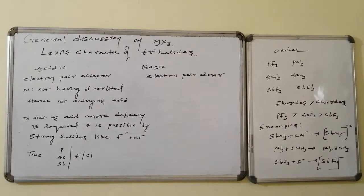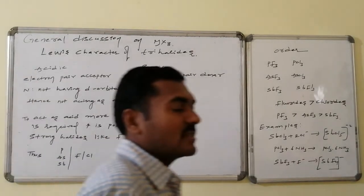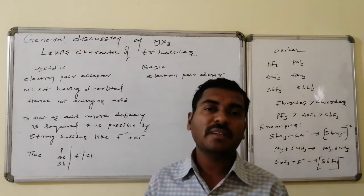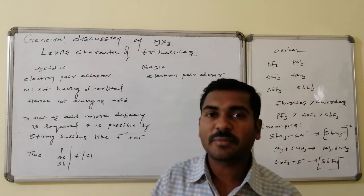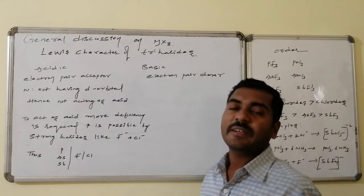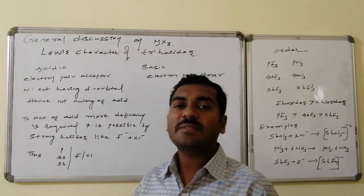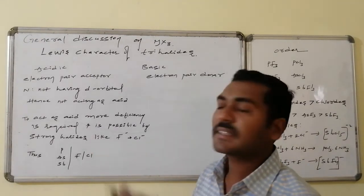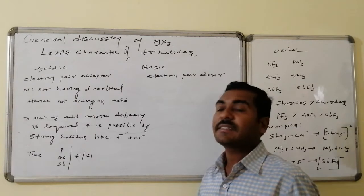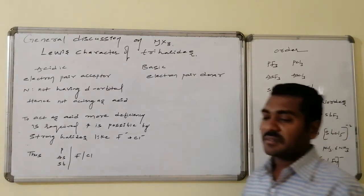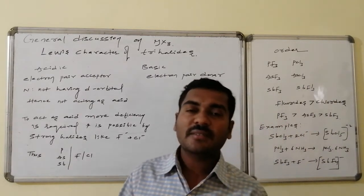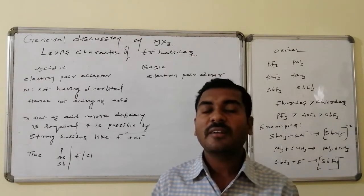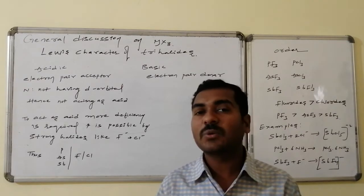The next point is the Lewis character of the trihalides. Lewis acid stands for electron pair acceptor. To accept electrons, a vacant orbital is required. But nitrogen does not have any kind of vacant orbital. Hence, nitrogen halides are not acting as Lewis acids.